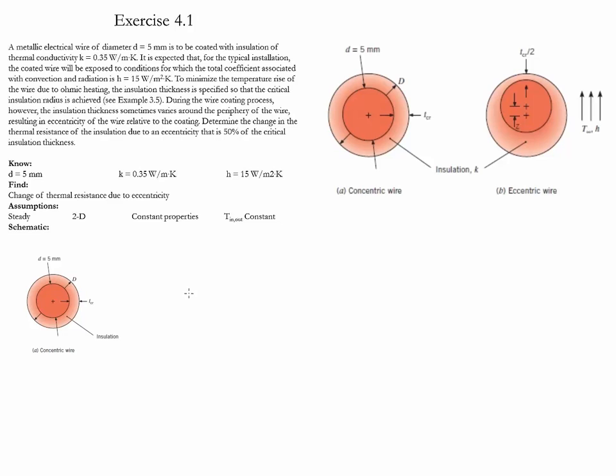Let's start the analysis with the concentric wire. Using the information that we got from example 3.6, we know that the critical radius is equal to the value of the conductivity divided by the convection coefficient. For this particular problem, this value is going to be equal to 23 millimeters.